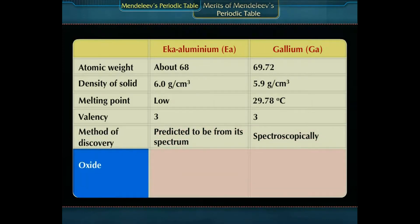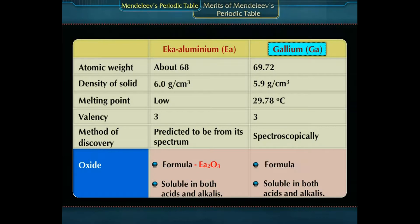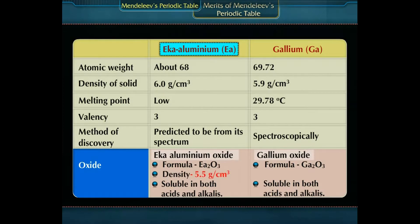The formula of the oxides of both elements is similar, and both oxides are soluble in both acids and alkalies. Eka-Aluminium oxide is Ea2O3 and Gallium oxide is Ga2O3. Their densities were also found to be similar: the density of Eka-Aluminium oxide was 5.5 g/cm³ and that of Gallium oxide is 5.88 g/cm³.